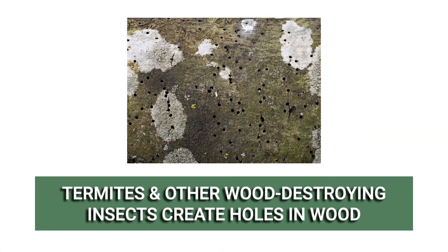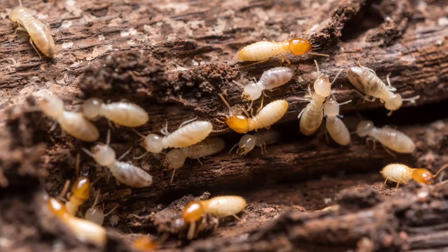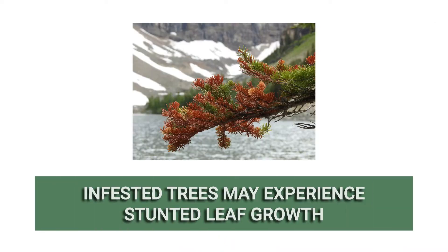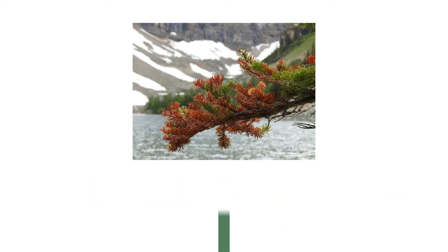Look for spots where the bark has fallen off and knock on tree trunks. Termites feed on cellulose, so you may find tunnels around the tree or hear a hollow sound when knocking. Finally, observe the branches for a lack of leaf growth, as many termite species will destroy trees from the roots, resulting in a loss of water and nutrients for the tree.